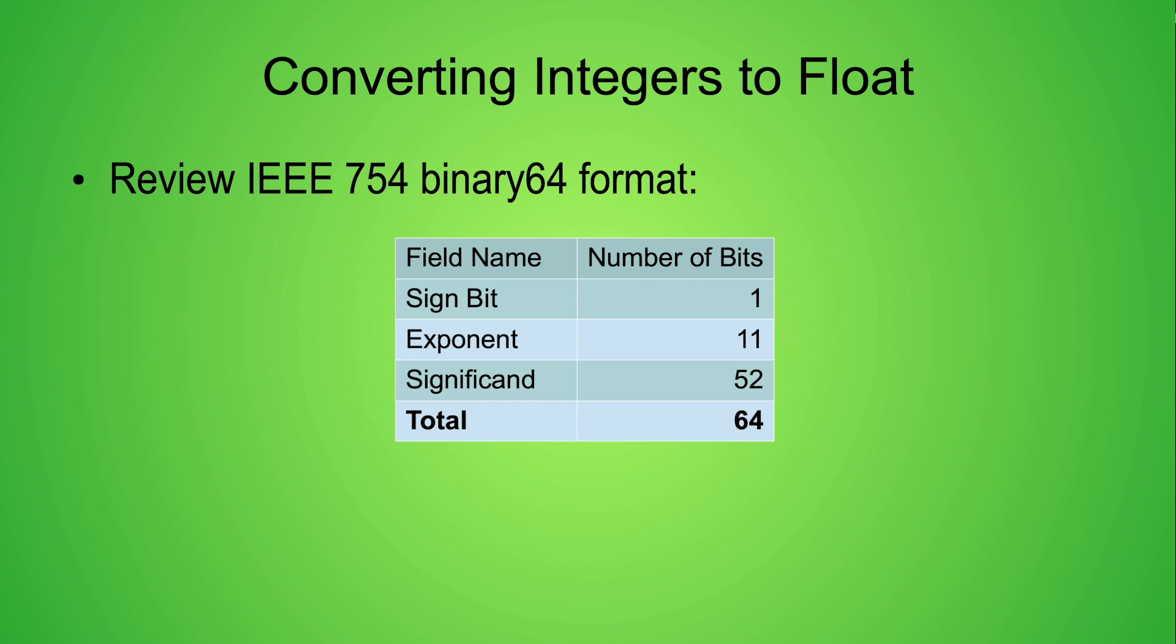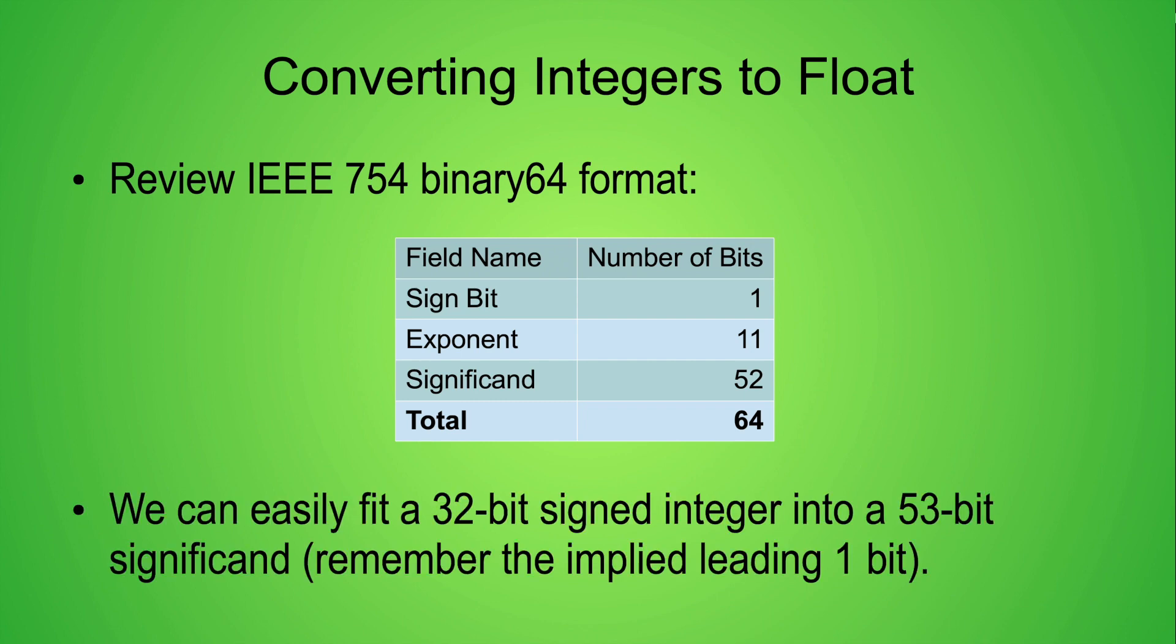Let's review the fields of the binary64 format. This format has a sign bit, an 11-bit exponent field, and finally a 52-bit significand field. Remember that for normal numbers, the significand field is effectively 53 bits wide because we have an implied leading 1 bit. All of the 32-bit signed integer values will be converted into either a binary64 positive zero value or a normal number. We can quickly see that a 32-bit integer will easily fit without rounding into a 53-bit significand value.